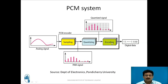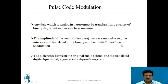The output of the encoder is represented in the form of ones and zeros, so the analog signal is converted to a binary 1010 form. Any analog data must be translated into a series of binary digits before transmission. The amplitude of a sound or voice data wave is sampled at regular intervals and translated into binary numbers with pulse code modulation.